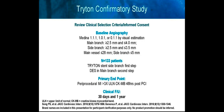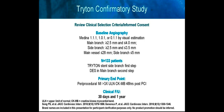The Triton confirmatory study built upon the pivotal study whereby a predefined benchmark was used to determine whether the Triton was safe in terms of risk of periprocedural myocardial infarction. In this study of 133 patients, it was ensured that all side branches were at least 2.5 millimeters or larger by visual estimation. The endpoints were clinical follow-up at 30 days and one year. When using the protocol definition of MI and ensuring vessels were 2.5 millimeters or larger, the performance goal of 17.9% was met easily with no significant difference between provisional and Triton.